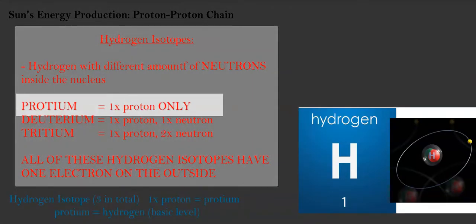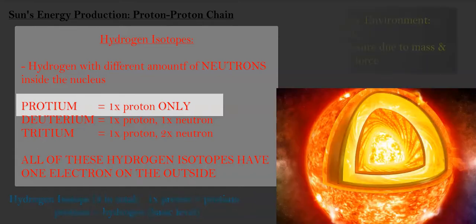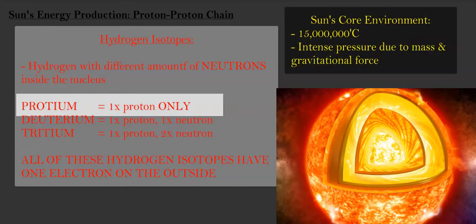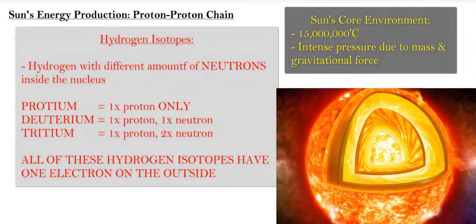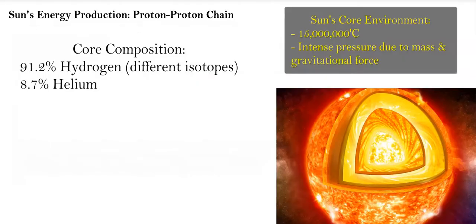In the sun's core, which is under immense pressure and temperature through gravity and pressure and mass of the sun, it's looking at intense pressure and intense heat of around 15 million degrees Celsius. The composition of the core, as we know it, is around 91.2% hydrogen and 8.7% helium.